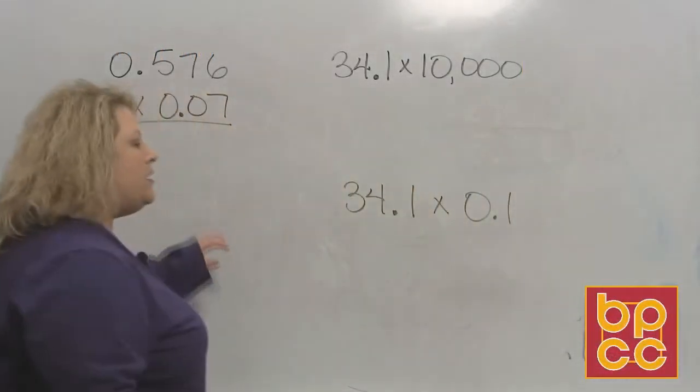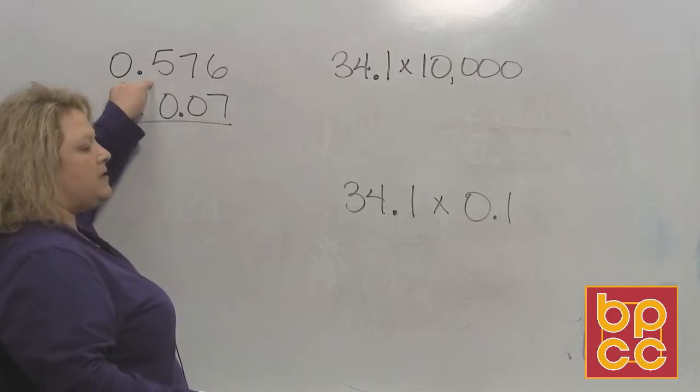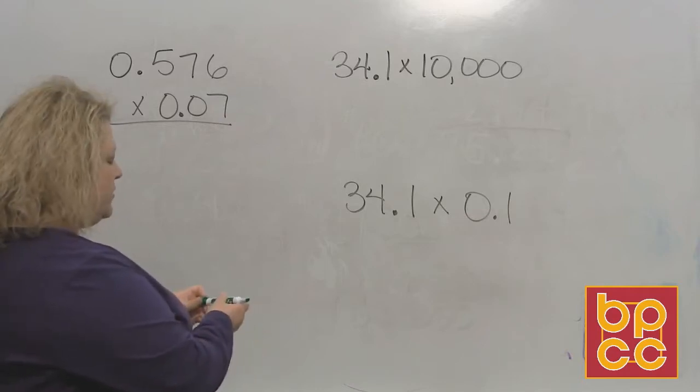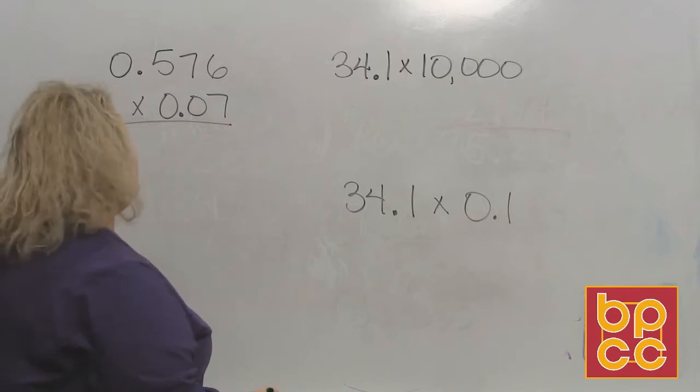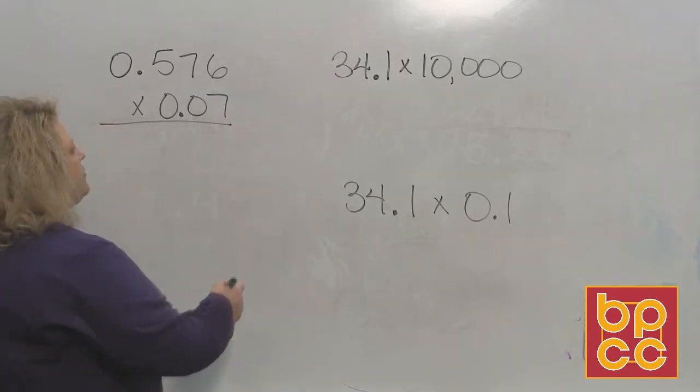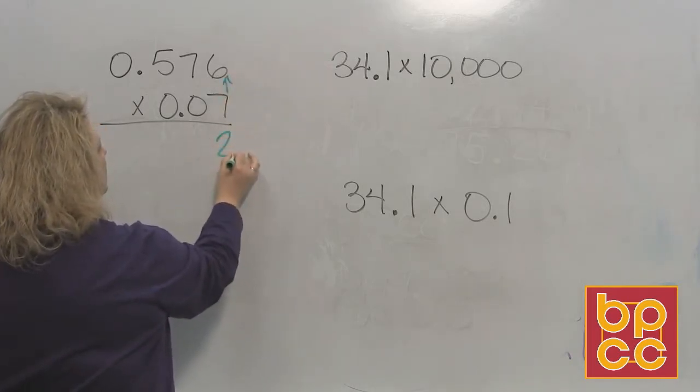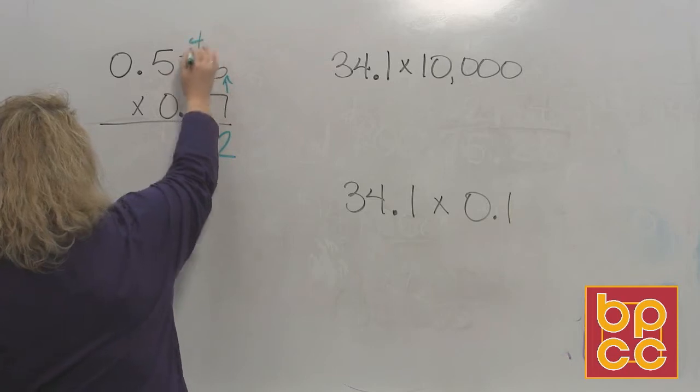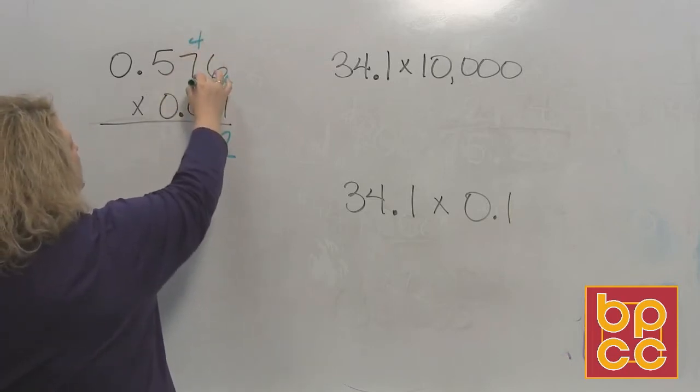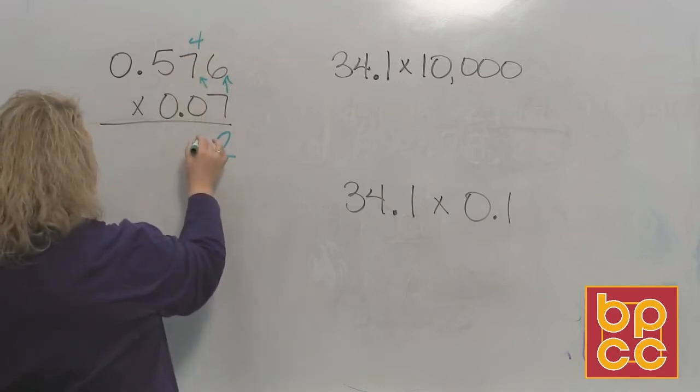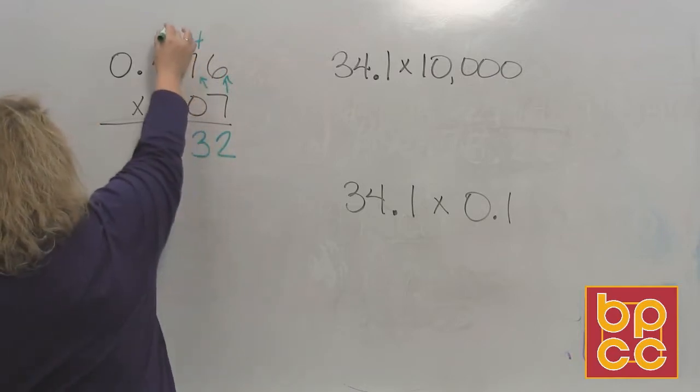Alright, so we have 0.576 and I want to multiply that by 0.07. So what I'm going to do is just multiplication like I did in one of the previous modules. You do 7 times 6, that would be 42. So put your 2 and carry the 4 up. Then 7 times 7 would be 49. 49 plus 4 would make 53.